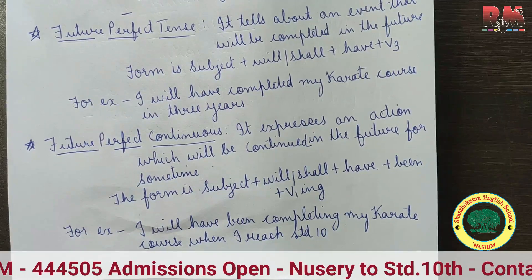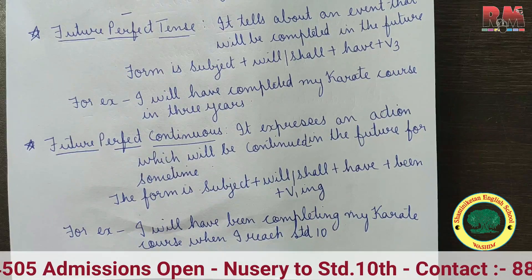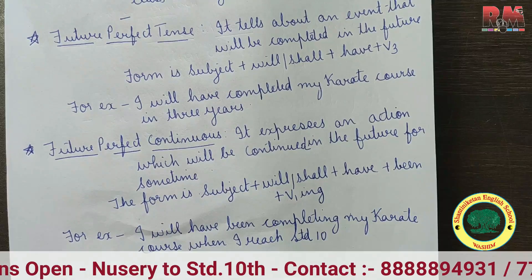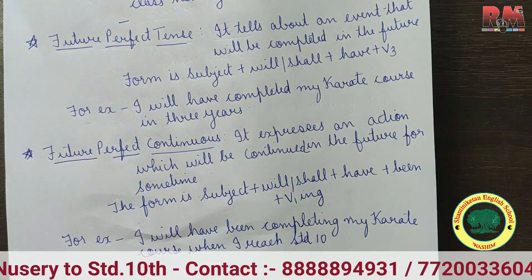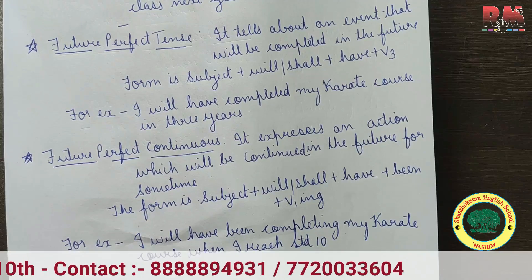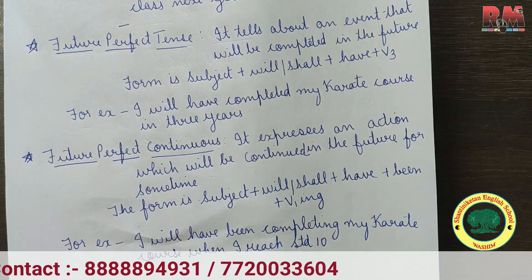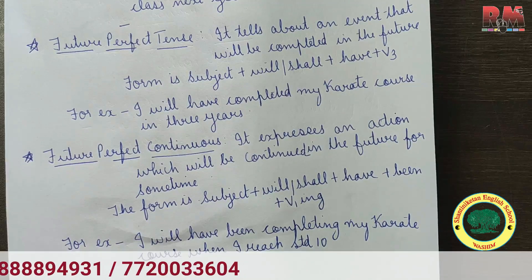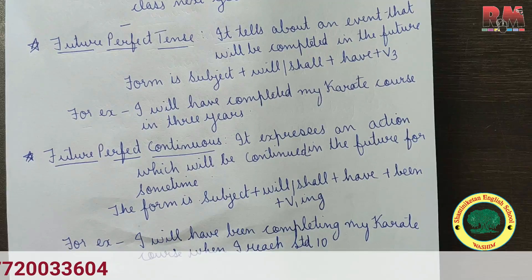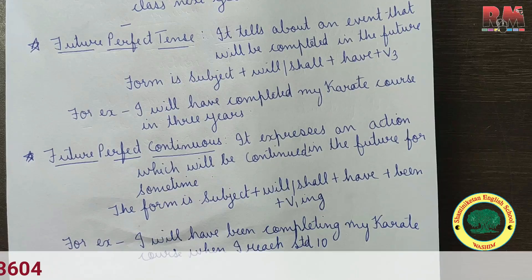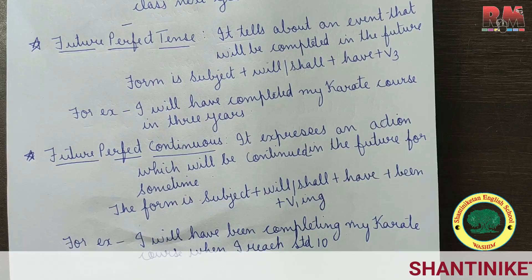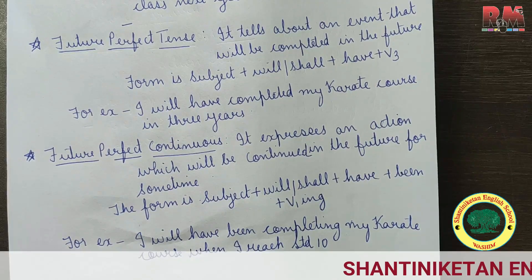Future perfect continuous tense expresses an action which will be continued in the future for some time. The form is subject plus will/shall plus have plus been plus V1+ing. For example: 'I will have been completing my Karate course when I reach standard 10.' This is all about the 12 tense forms.